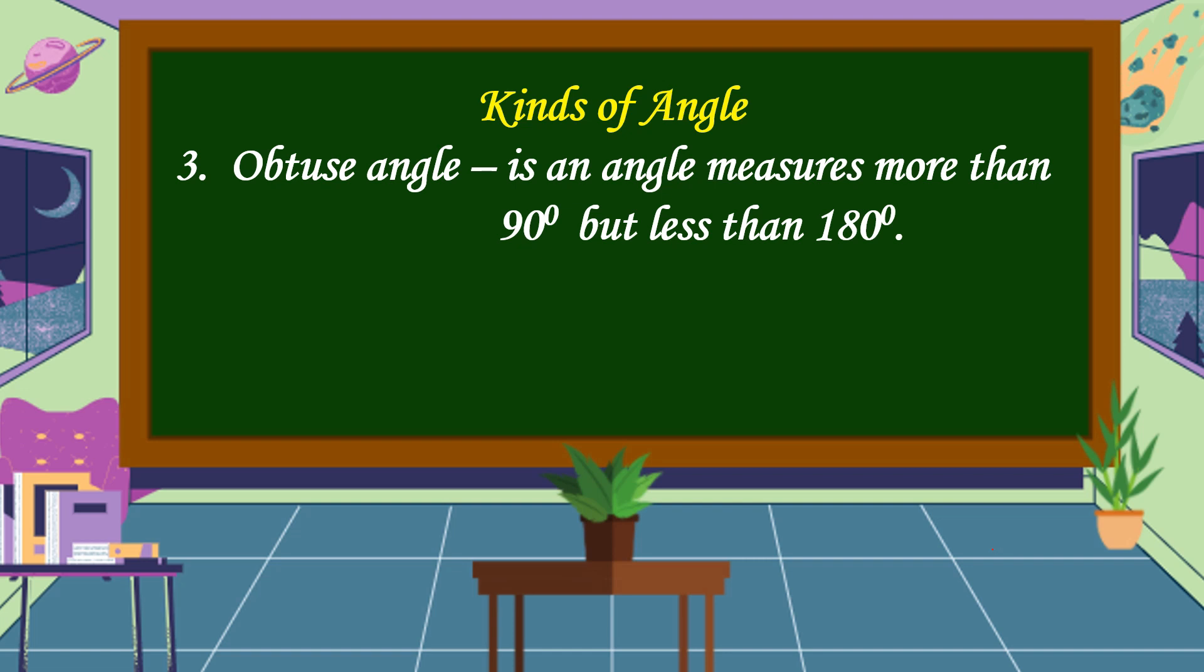How many obtuse angles do we have? There are 89 obtuse angles. These are from 91 degrees to 179 degrees. This is an example of an obtuse angle.